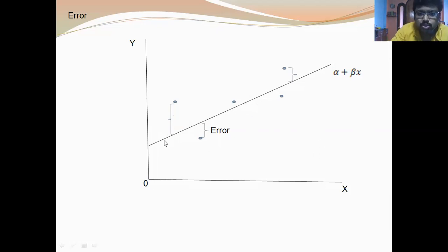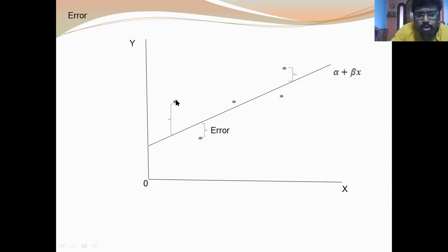Now, if we consider the error term, this is the true line. This point shows a specific amount of X and a corresponding amount of Y. This point shows this amount of X and this amount of Y — meaning if we have this amount of independent variable X, then we get this amount of dependent variable Y.